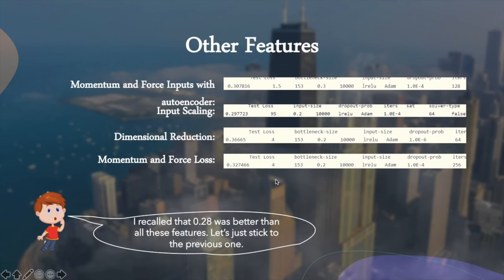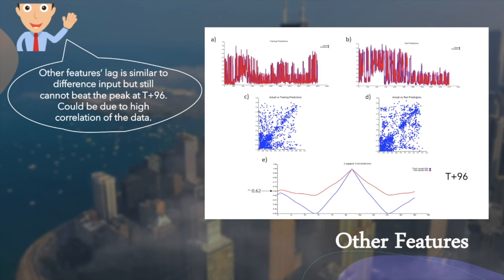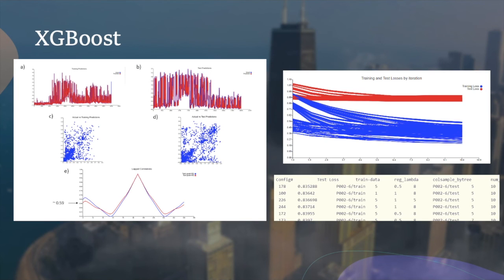We also tried several other features but they do not perform as good as difference with higher test loss. This slide shows the representative lag of the features from the previous slide because these features show similarities with this lag. The lag did not show any improvement peaks at 96. We have also tried another framework, XGBoost, but the test loss and lag are very bad because the model cannot be updated and has limited function.